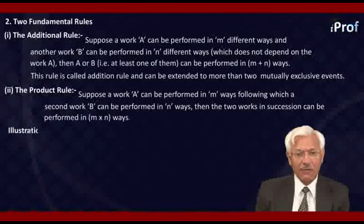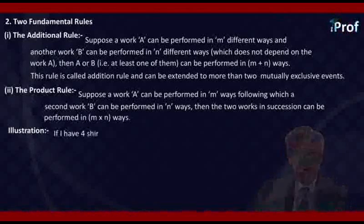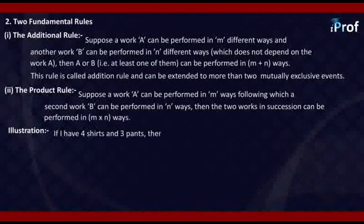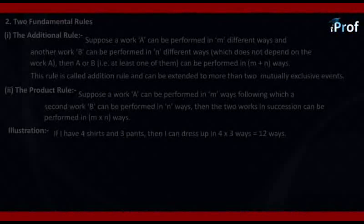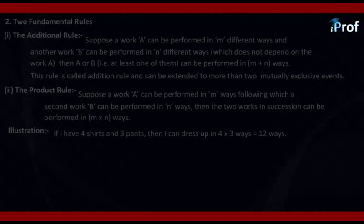Suppose I have four shirts and three pants. Then I can dress up in 4×3, that is equal to twelve ways. Because corresponding to every shirt, I can use one of the three pants. Since there are four shirts, naturally the number of ways in which I can dress up is 4×3. That is what I have used as the product rule.